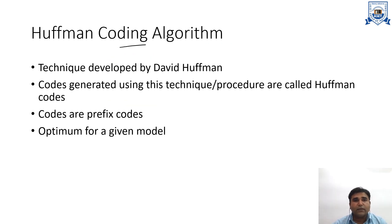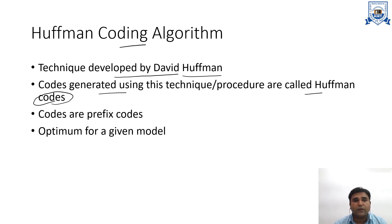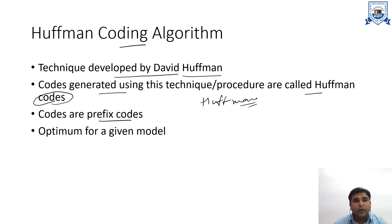Basically, Huffman coding was developed by David Huffman and the codes generated using this technique are called Huffman codes. Whatever codewords we derive are basically called Huffman codes. These codes are prefix codes and they are optimum for a given model.